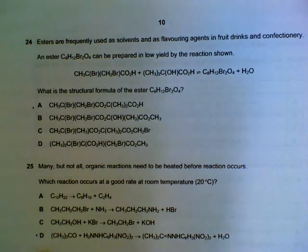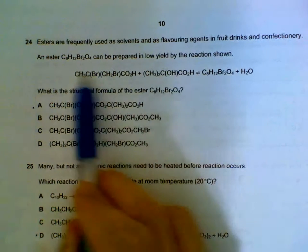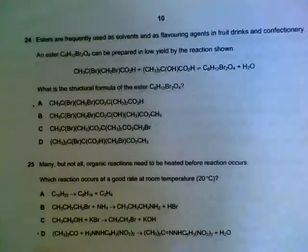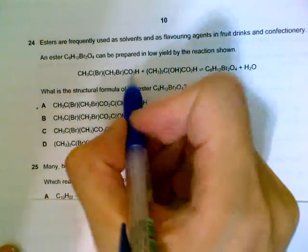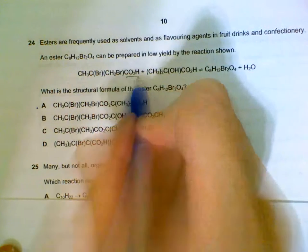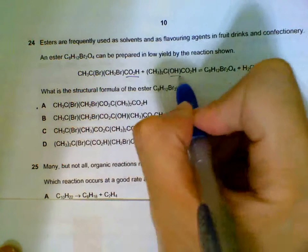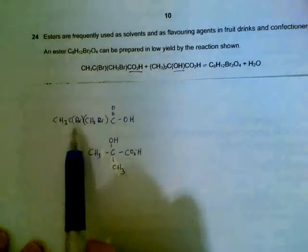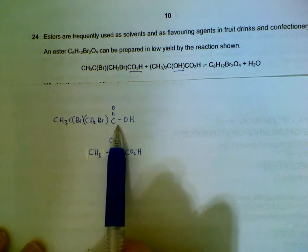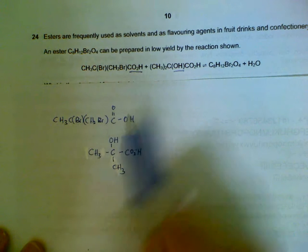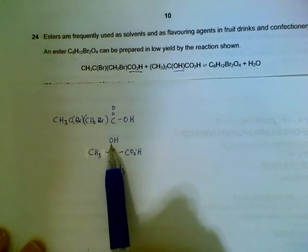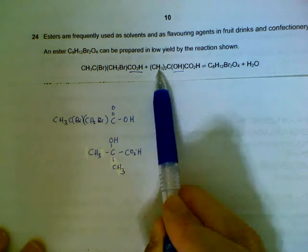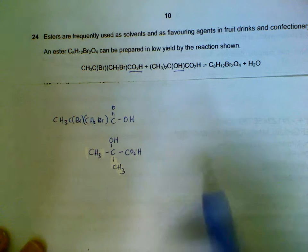Number 24: we have an ester that is formed — focus on the functional groups. The acid group is here and the alcohol group is on the other molecule, so we try to put them together. To help visualize, you can write it out: the acid in order COOH, the alcohol group placed up here so we can join it easily, and then two CH3 groups down here. That is what happens in esterification.